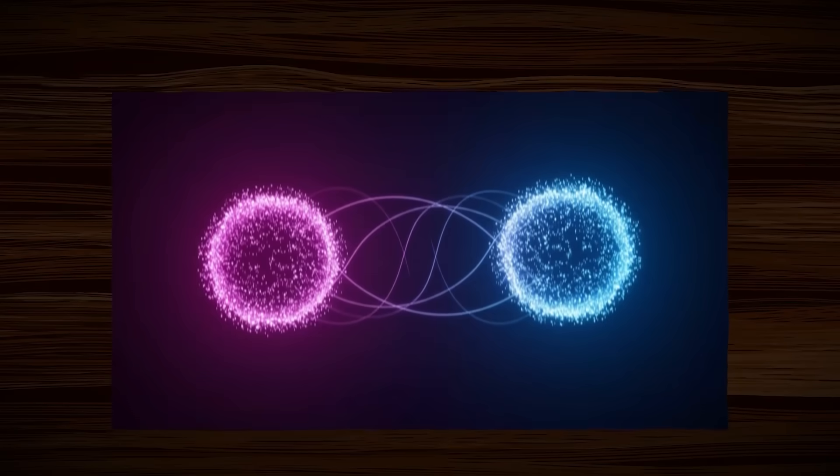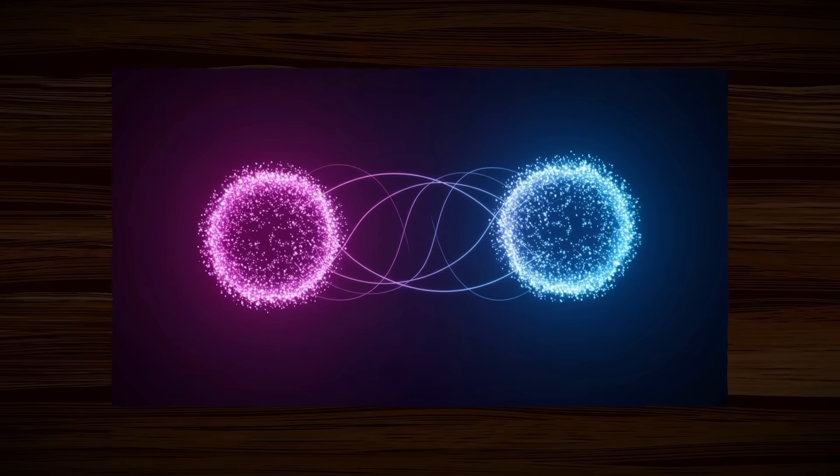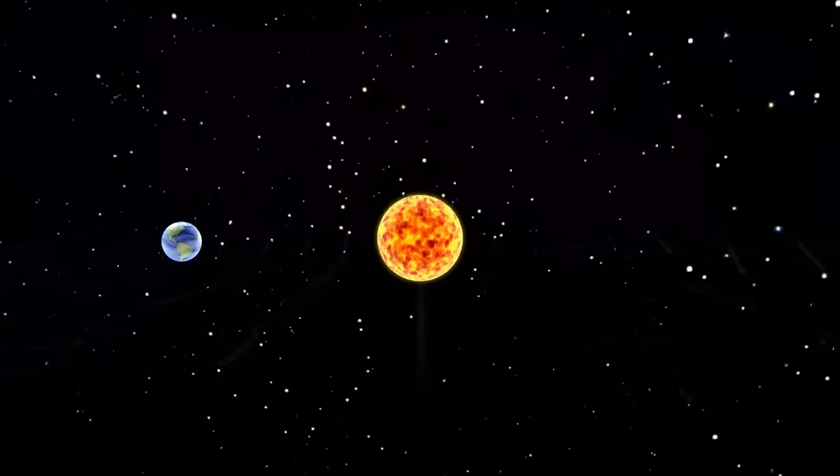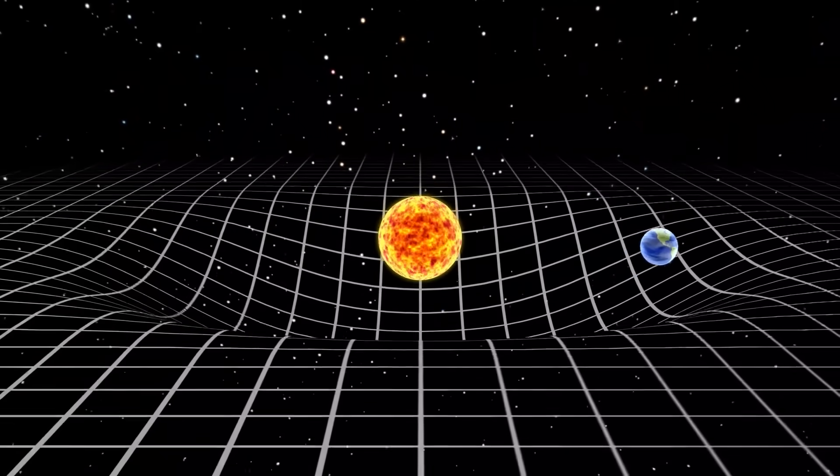It essentially creates a virtual model of the solar system at the quantum level. Instead of having to calculate each gravitational pull one by one, it can represent the entire complex system at once, allowing the interactions to play out naturally within the simulation.